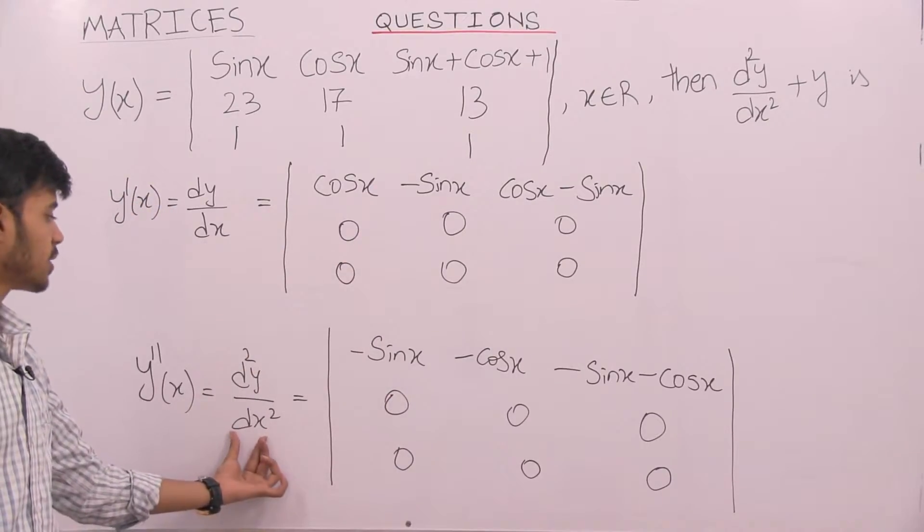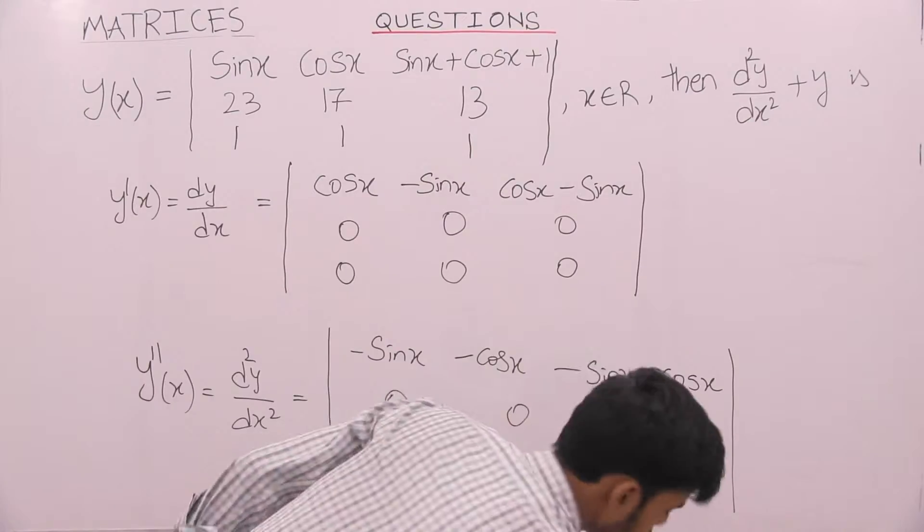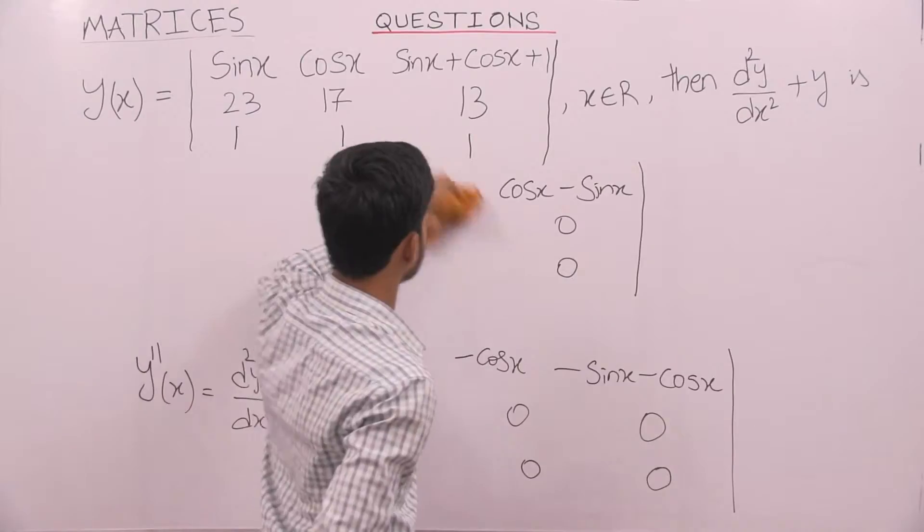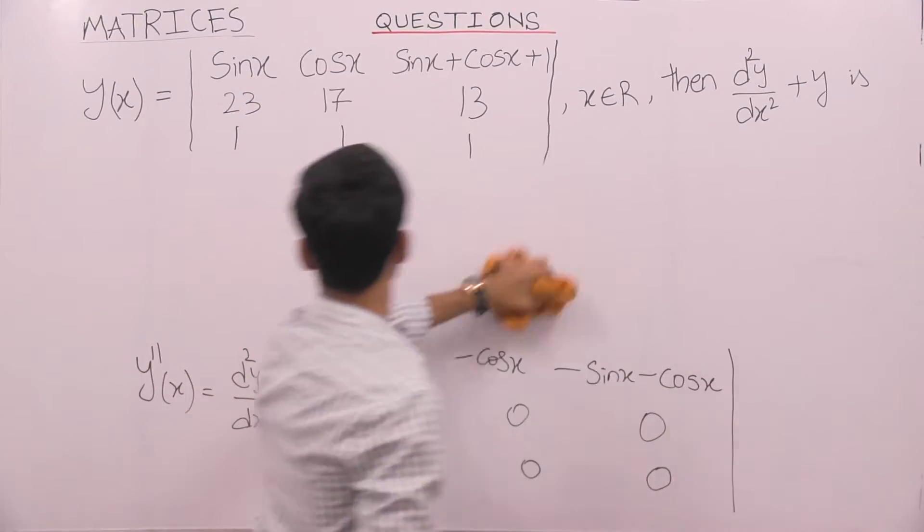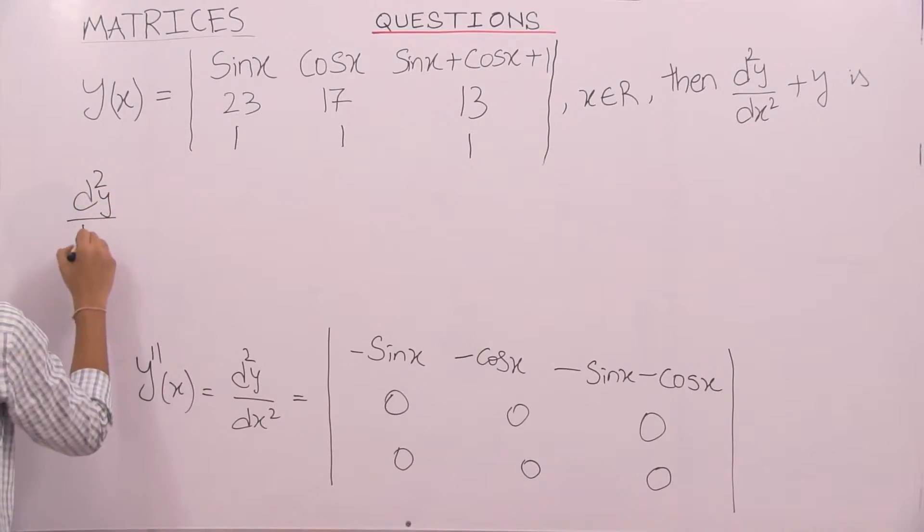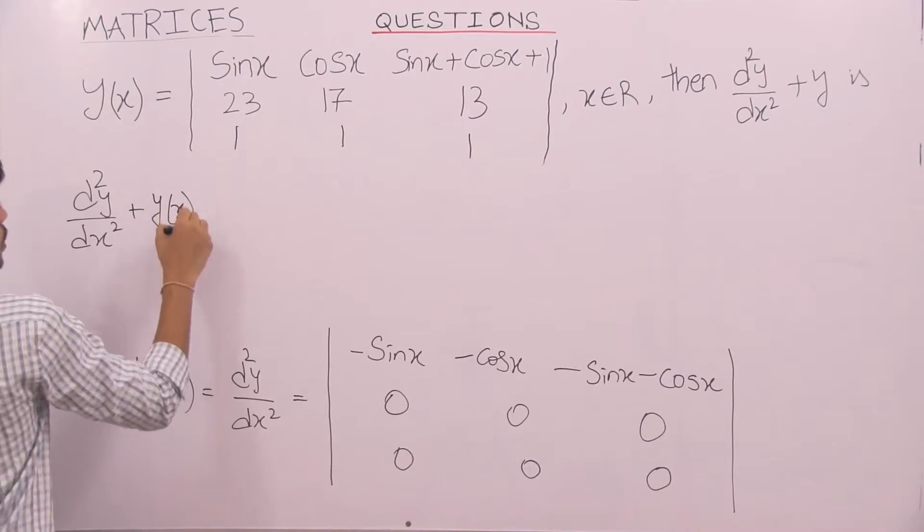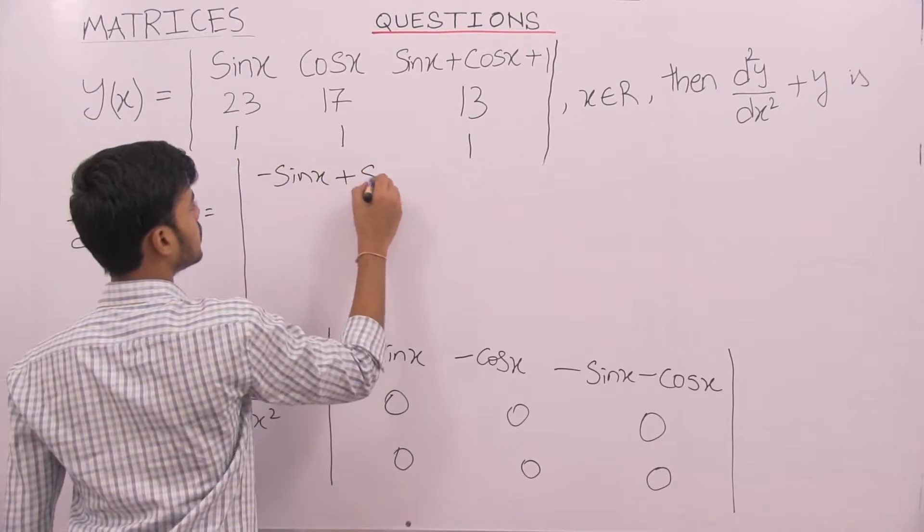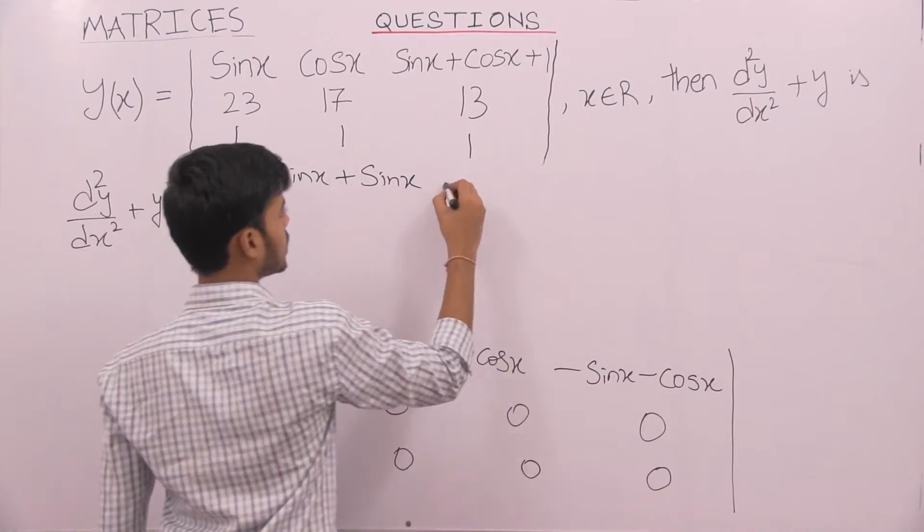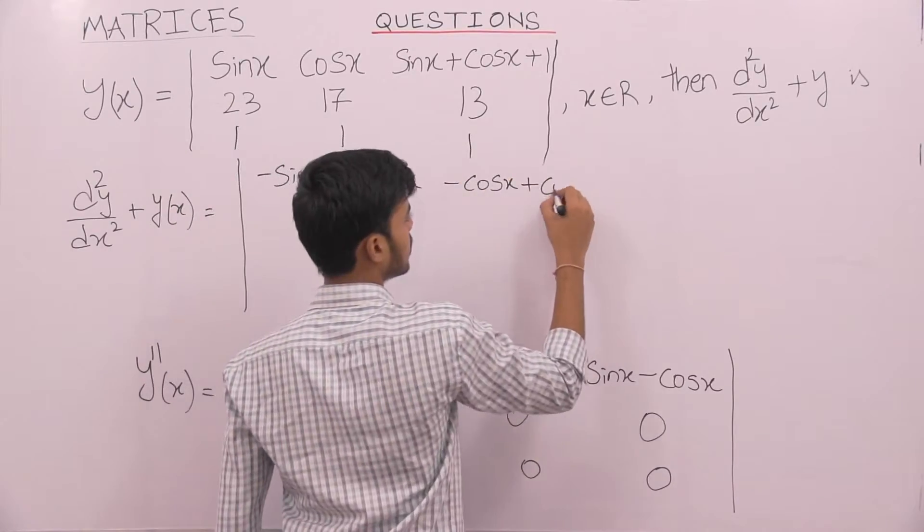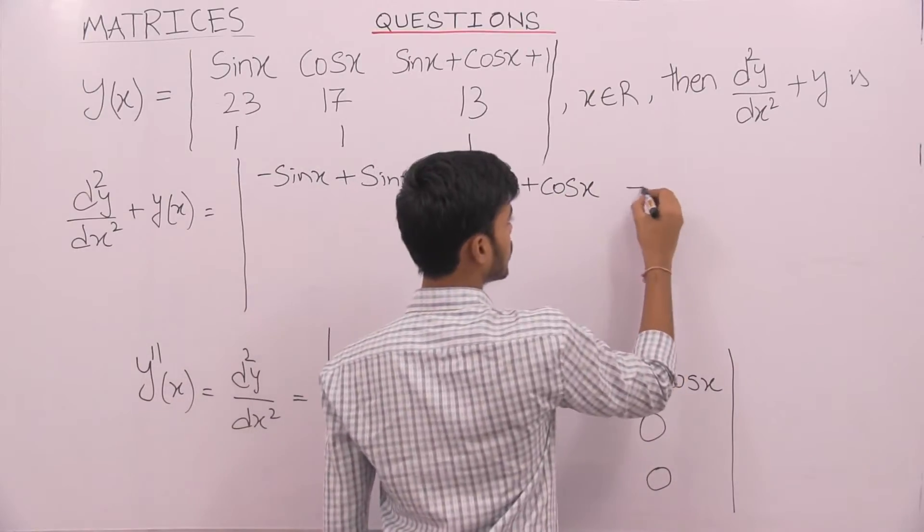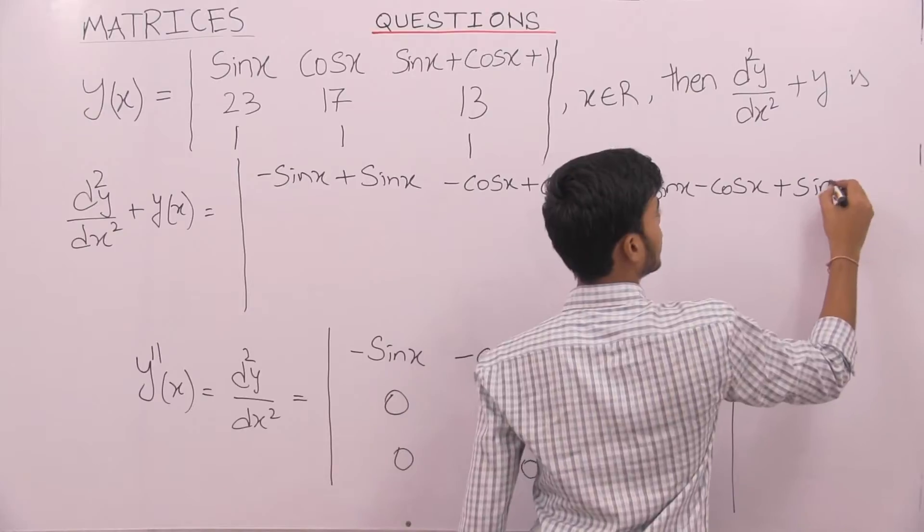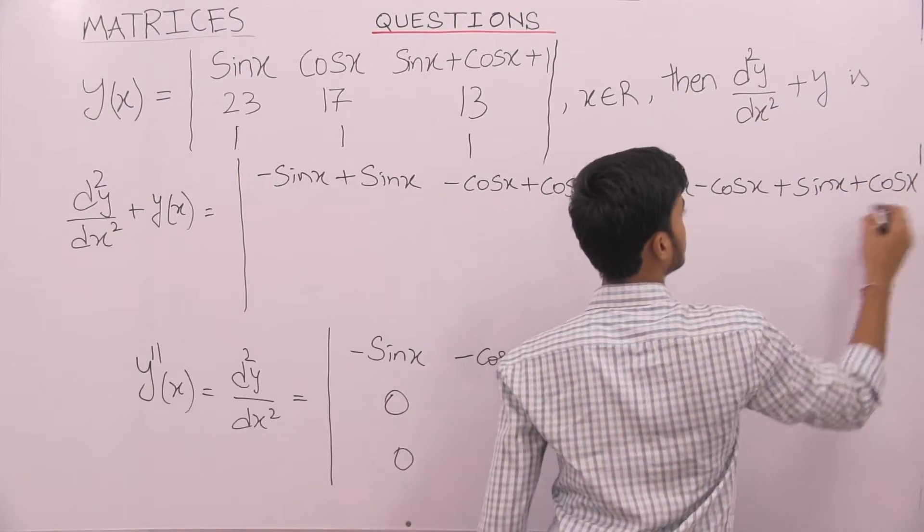We need the value of d square y by dx square plus y of x. So, let us simply add them. d square y by dx square plus y of x would give us minus sin x plus sin x minus cos x plus cos x plus cos x plus sin x plus cos x plus 1, plus sin x plus cos x plus 1.